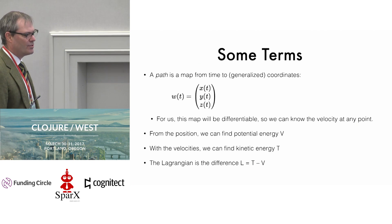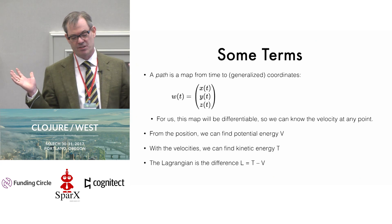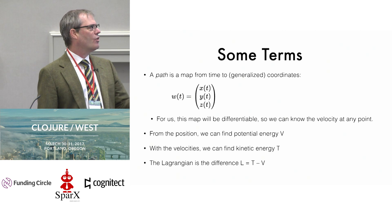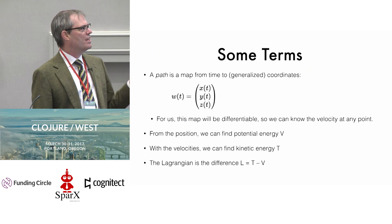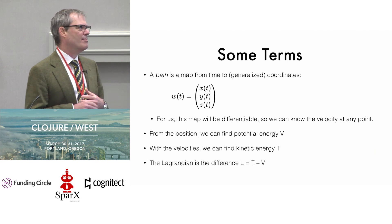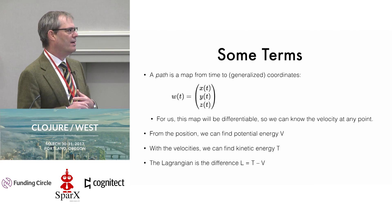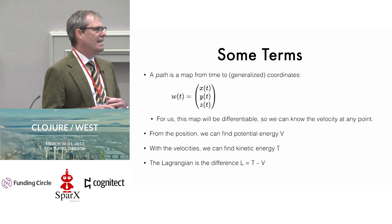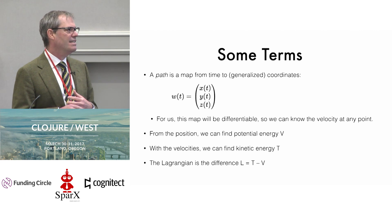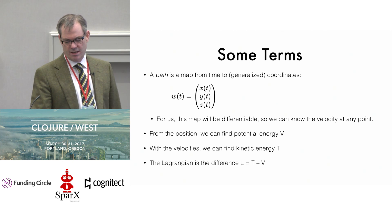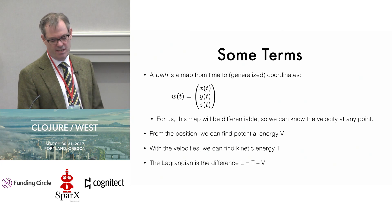I'm going to breeze over a couple of terms. The subject of Lagrangian mechanics is a big one, so we'll make some simplifying assumptions. I'll call our path a function W, which maps from time to the coordinates of objects in our system. We understand that this map is differentiable as many times as we like. From the position of objects in space we can find the potential energy V, and with position and velocities we can find the kinetic energy T. The Lagrangian is the difference: L equals T minus V.